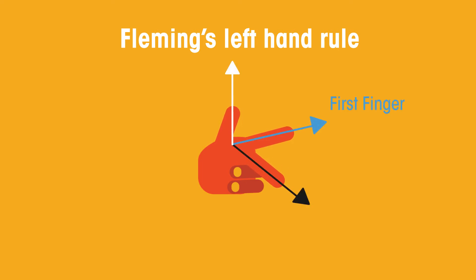Your first finger represents the direction of the magnetic field from north to south, so your finger is pointing to the south pole. Your second finger represents the direction of the electric current flowing from positive to negative, so your finger is pointing to the negative.